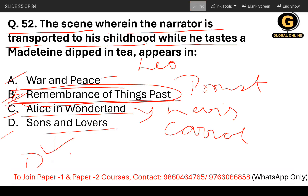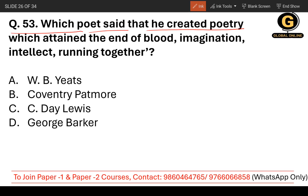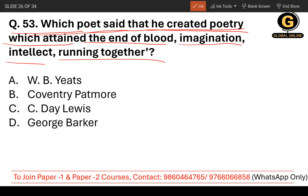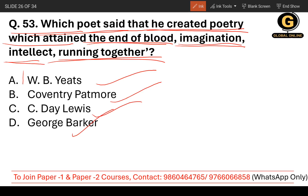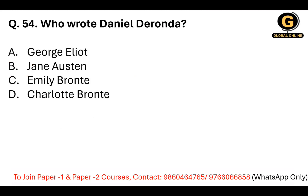Question number 53: Which poet said that he created poetry which should 'attend the end of blood, imagination, intellect running together'? The options are W.B. Yeats, Coventry Patmore, C. Day Lewis, and George Parker. The correct answer is W.B. Yeats — William Butler Yeats.